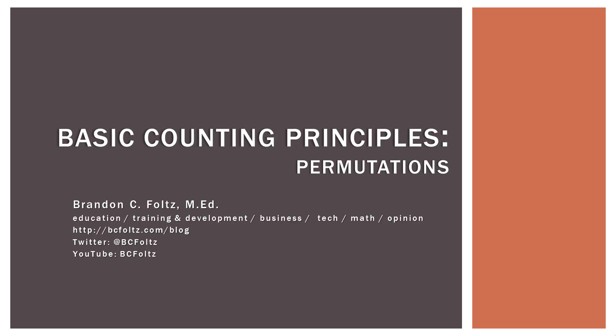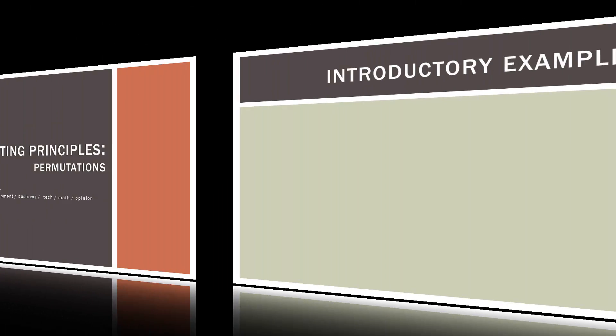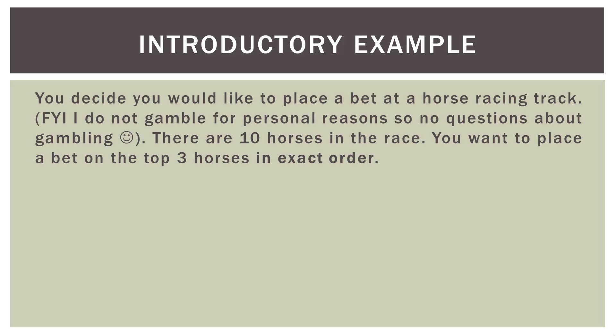In my last video I did a basic comparison of combinations and permutations. In this video we're going to focus on permutations — what they are, how we calculate them, and then an example or two. Here's an introductory example: you decide you'd like to place a bet at a horse racing track. There are 10 horses in the race, and you want to place a bet on the top three horses in exact order.